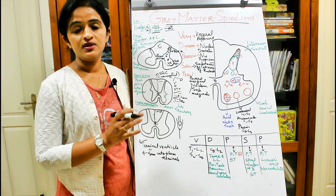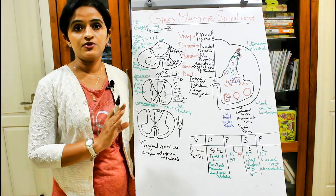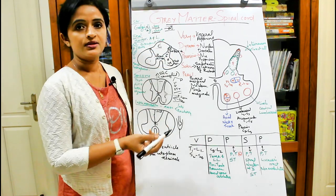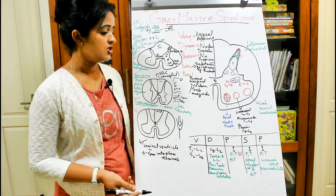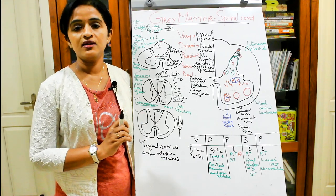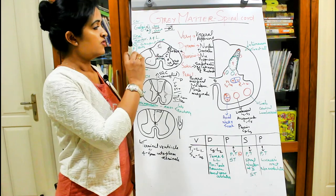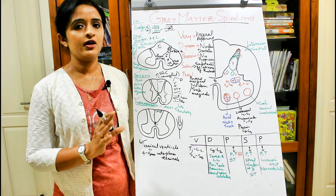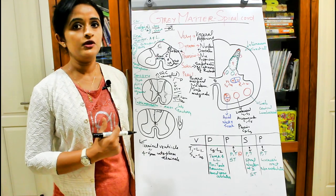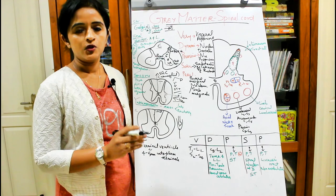Now for the functional classification of neurons. Functionally, there are mainly three types: motor neurons, sensory neurons, and interneurons. The gray matter is made up of neurons, neuroglia cells, and blood vessels. Motor neurons are confined to the anterior horn and the lateral horn.